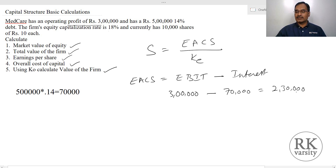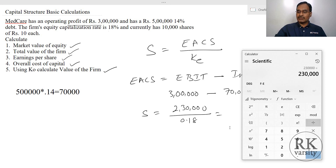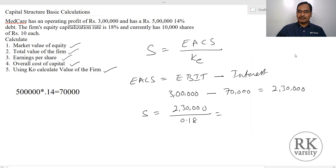So earnings available to common shareholders is 2 lakhs 30,000. Then the market value of equity S equals ESCS of 2 lakhs 30,000 divided by the equity capitalization rate of 18% (0.18). So 2,30,000 divided by 0.18 gives 12 lakhs 77,778. This is the value of equity.